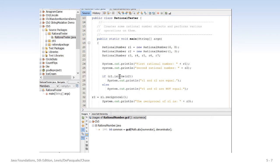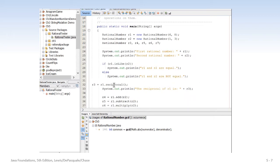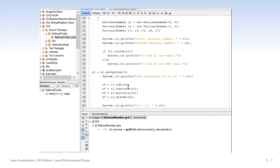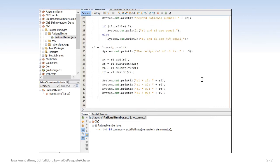So print out first rational number R1, second rational number R2. Then we call R1 reciprocal and assign that to R3, R1 subtract R2, R1 multiply R2, and you can see what's happening here. And then we'll just run this and show you how this works.